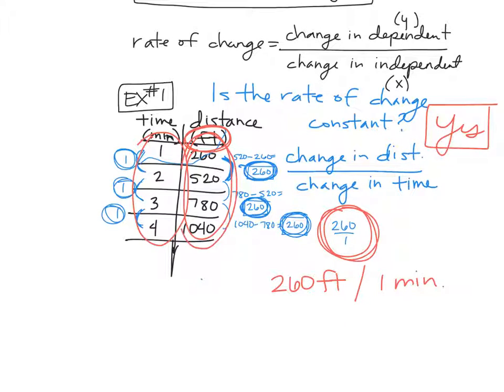It's always the dependent over the independent. So it's always going to be the change, a triangle means change, delta, the change in your y value over the change in your x value. So it's always going to be the y over the x.